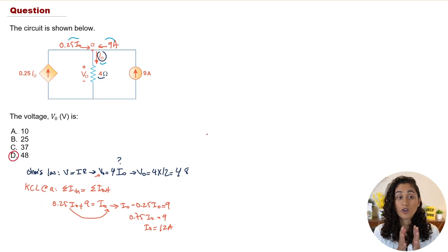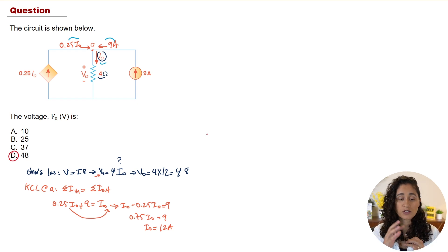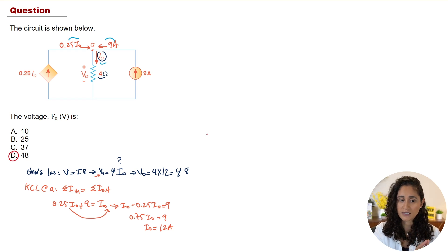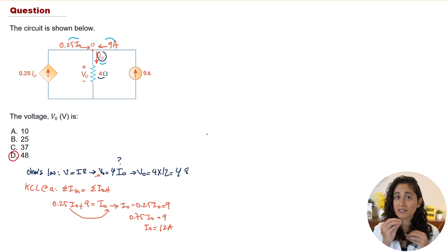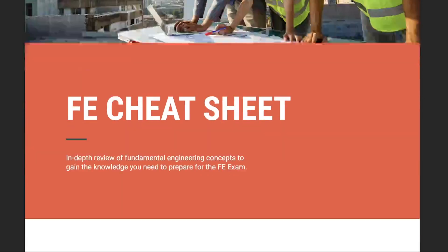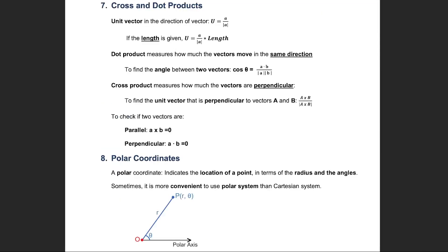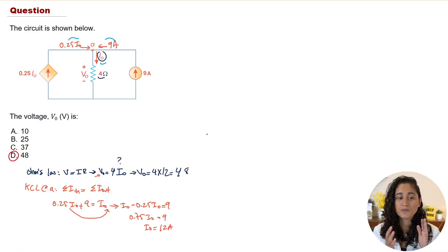So that's how we solve this type of problem. When you get a problem like this, always apply Ohm's law first — it's very helpful. Then apply either KCL or KVL, and sometimes you have to apply both to determine the current or voltage depending on the question. I recommend writing these steps in your cheat sheet so you don't forget during your exam. We also have a cheat sheet with important equations and concepts available for download.